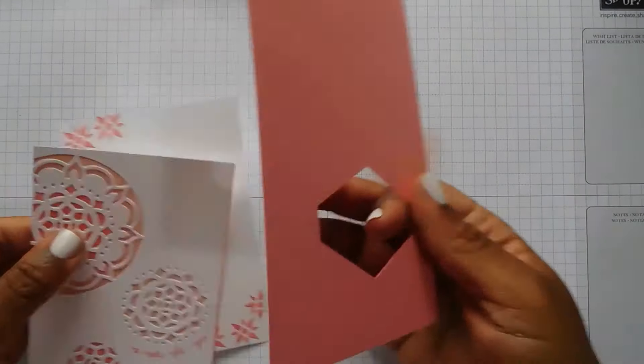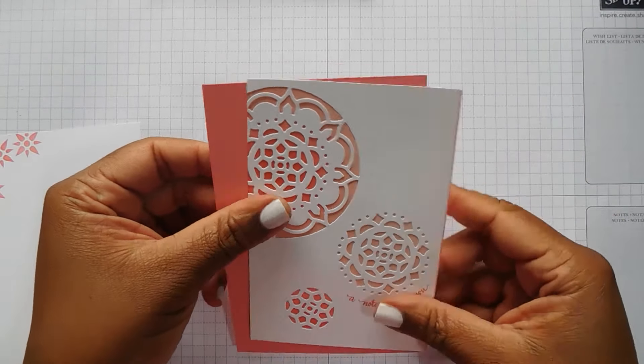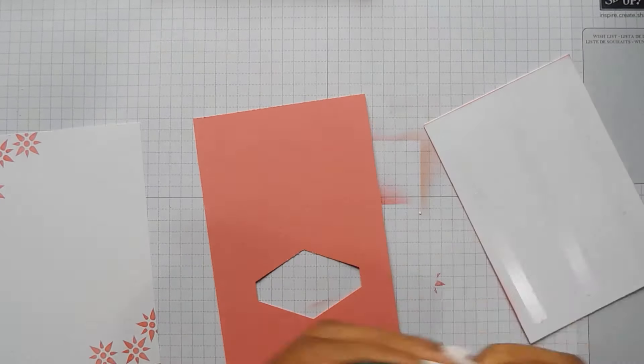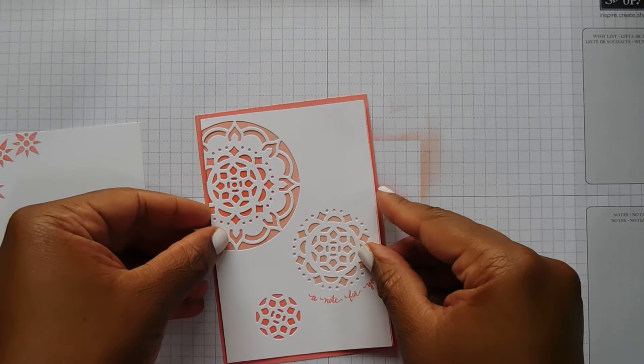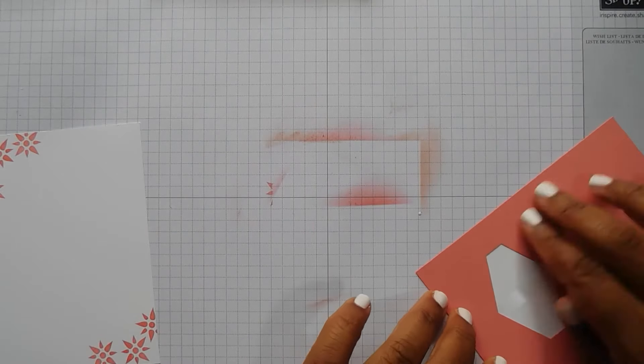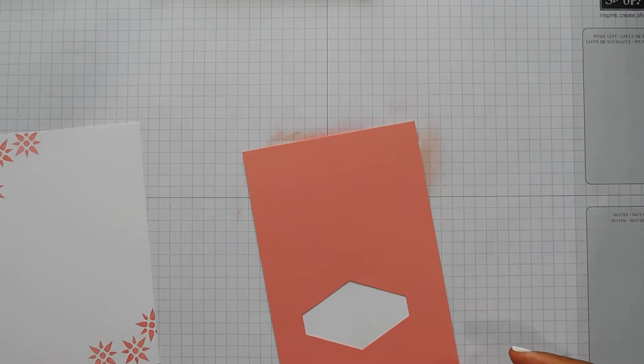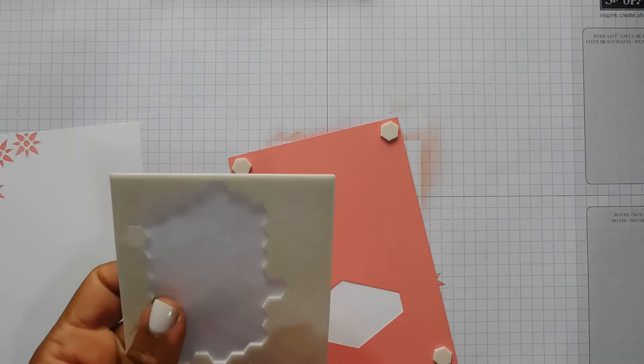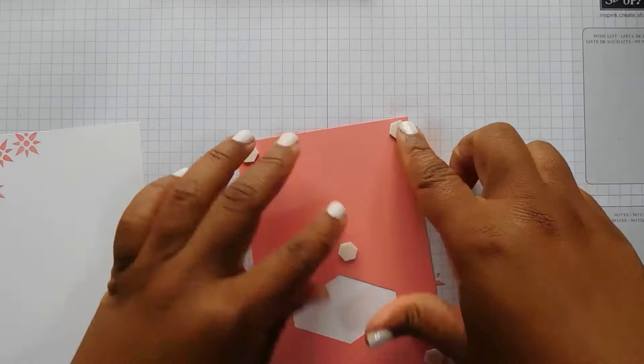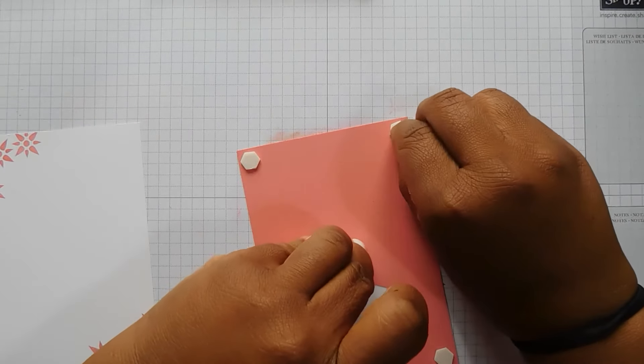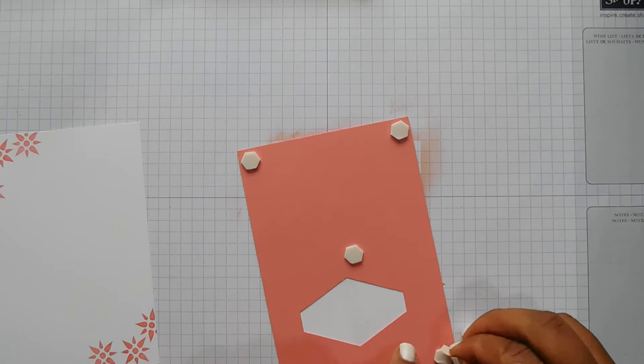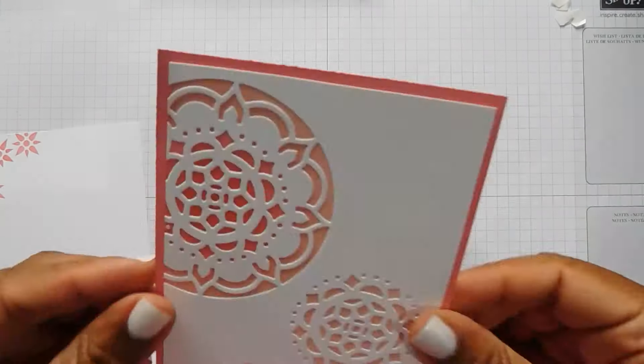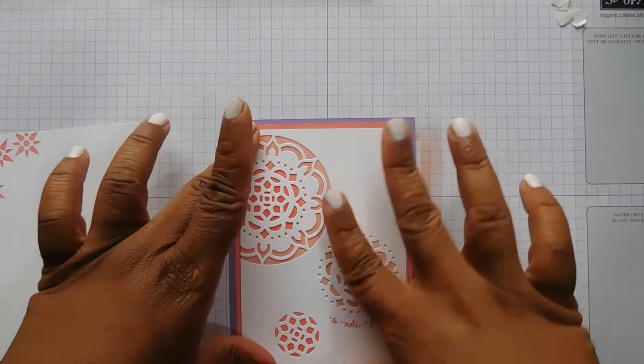So layering this up. Let's make sure that does fit. Yes it does. So flat onto my layer of Flirty Flamingo. Then it popped up onto the card base. Like so. Nearly stuck it upside down then. Gorgeous. And I'll just pop this on the inside. There we go.